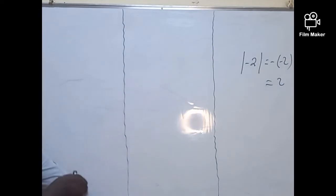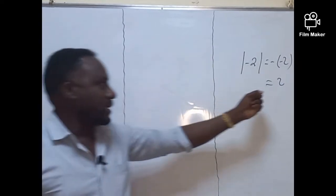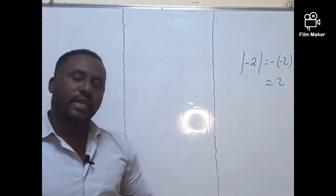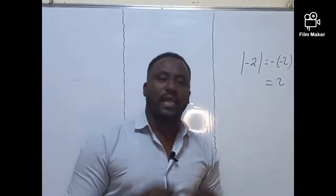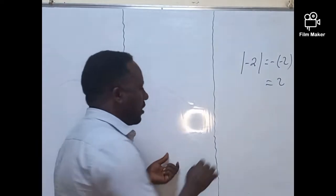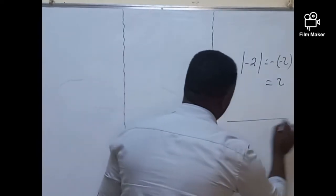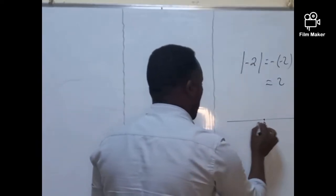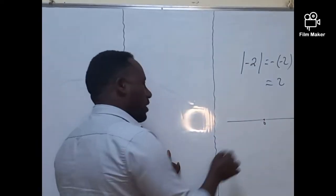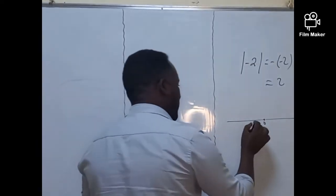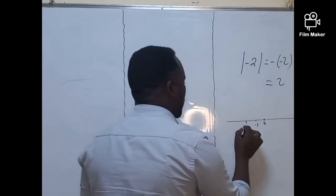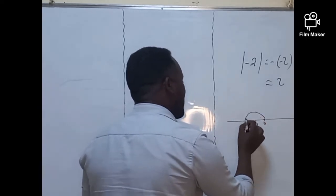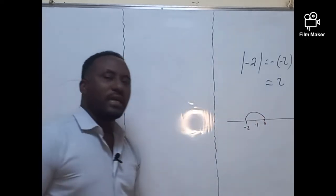Now, this means that the origin of negative two on the number line — this is the origin zero. On the left side, there is minus one, minus one. This is the origin of negative two.